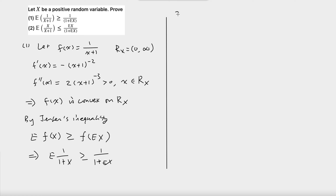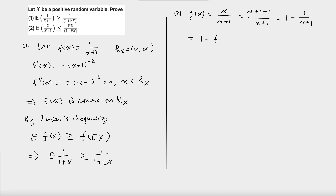For the second question, let g(x) equal x/(x+1). We can rewrite this as (x+1-1)/(x+1), which equals 1 minus 1/(x+1), and this is equal to 1 minus f(x).